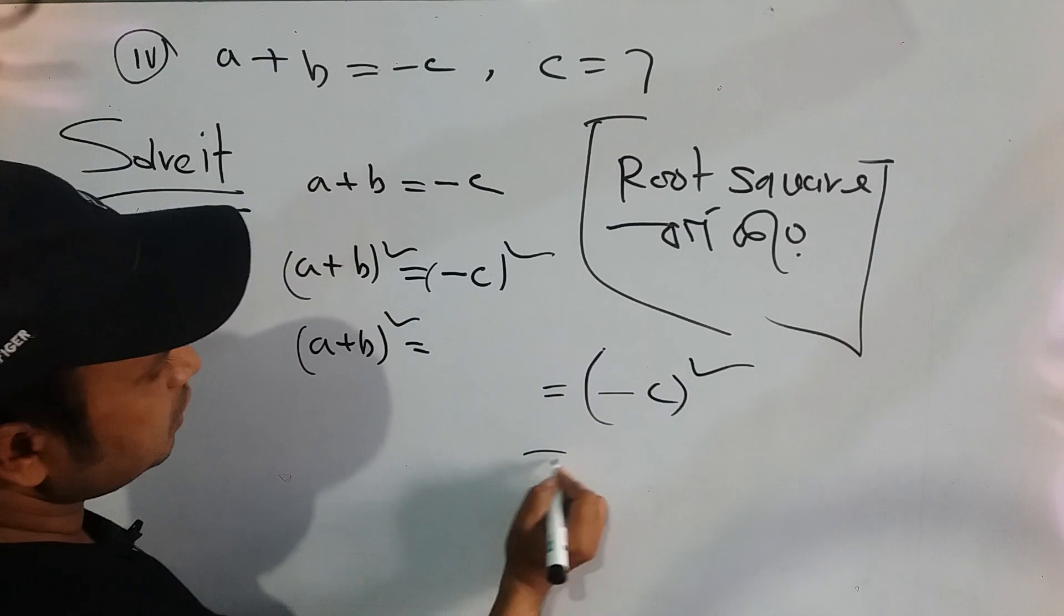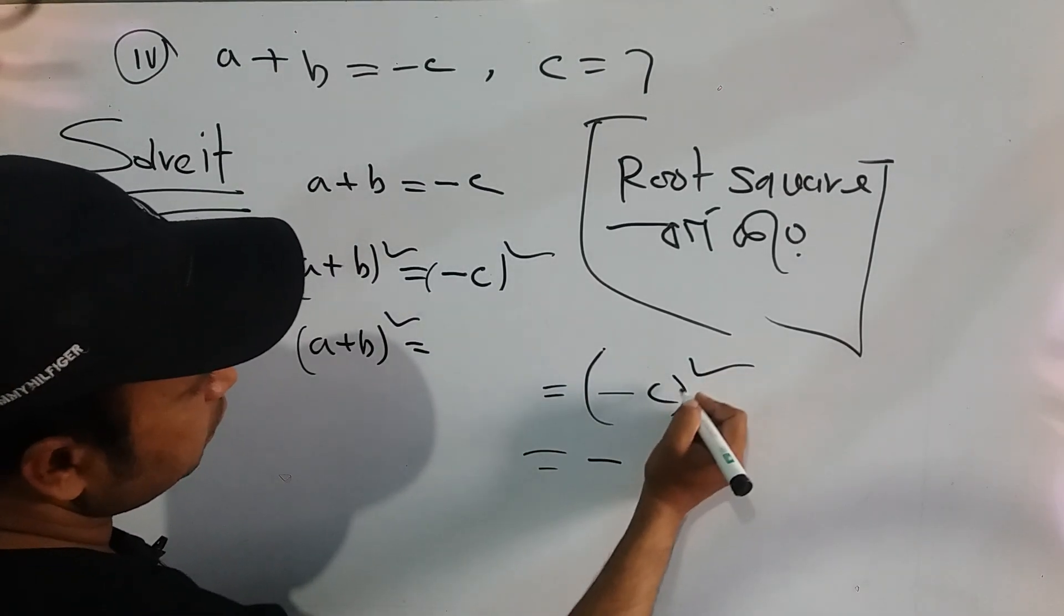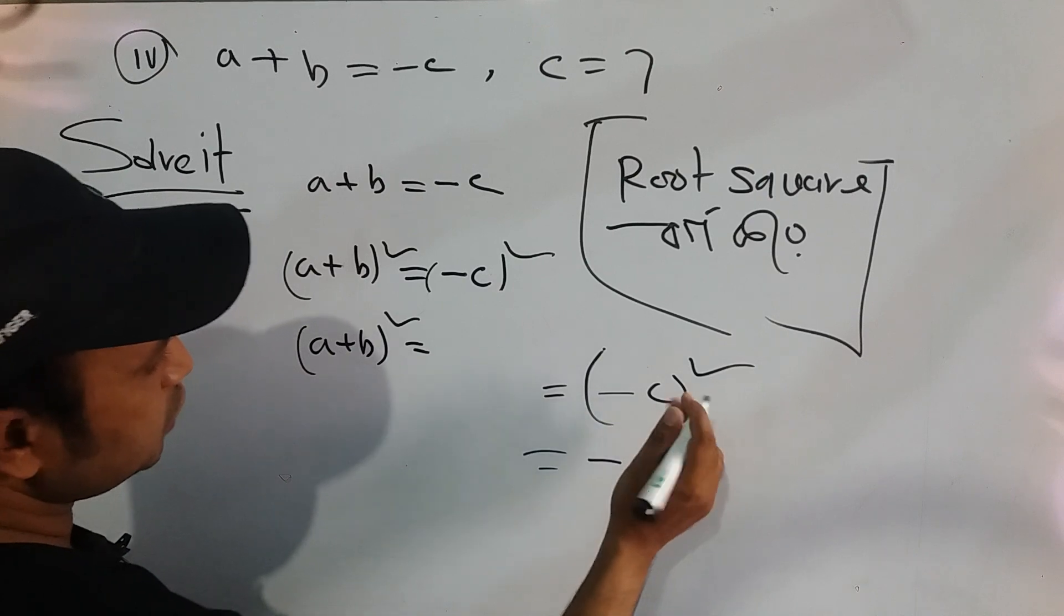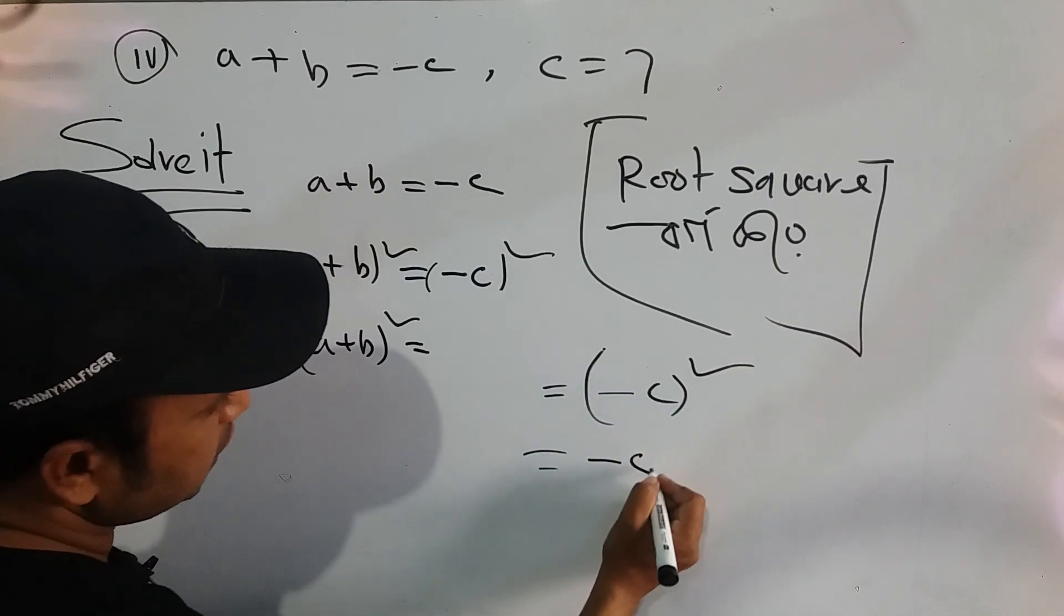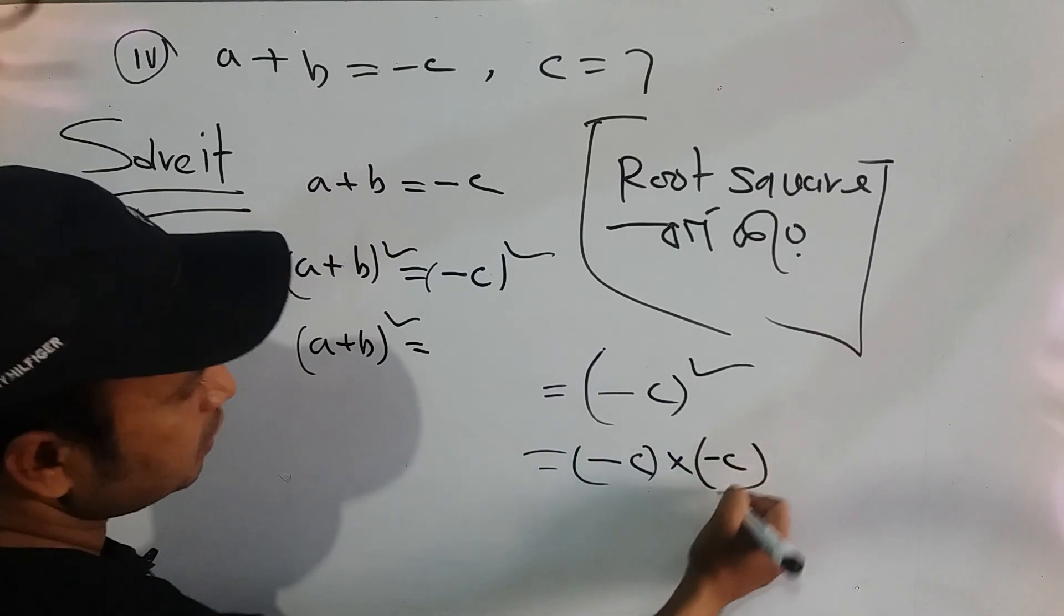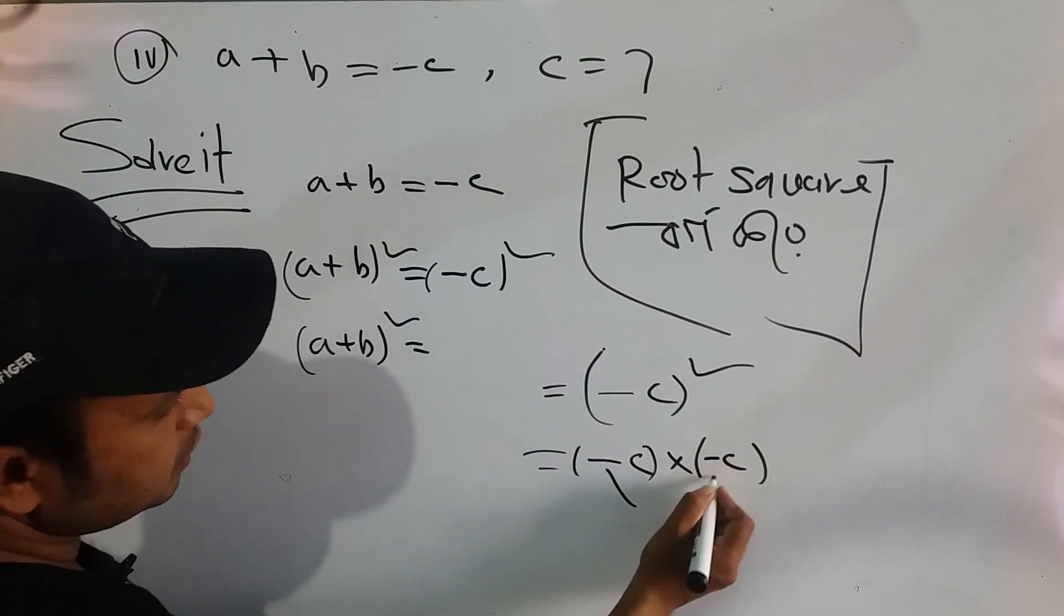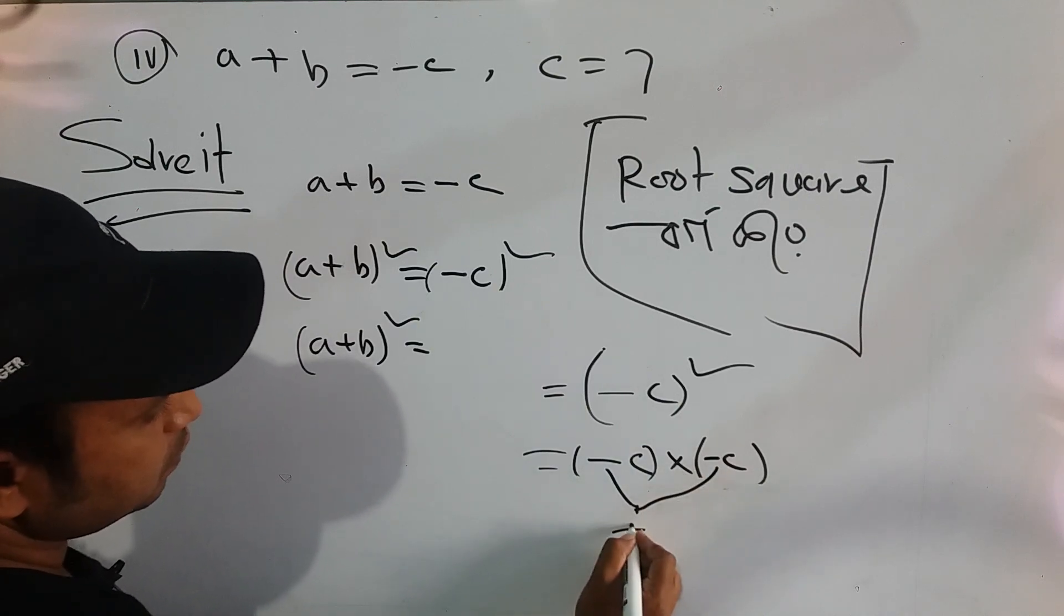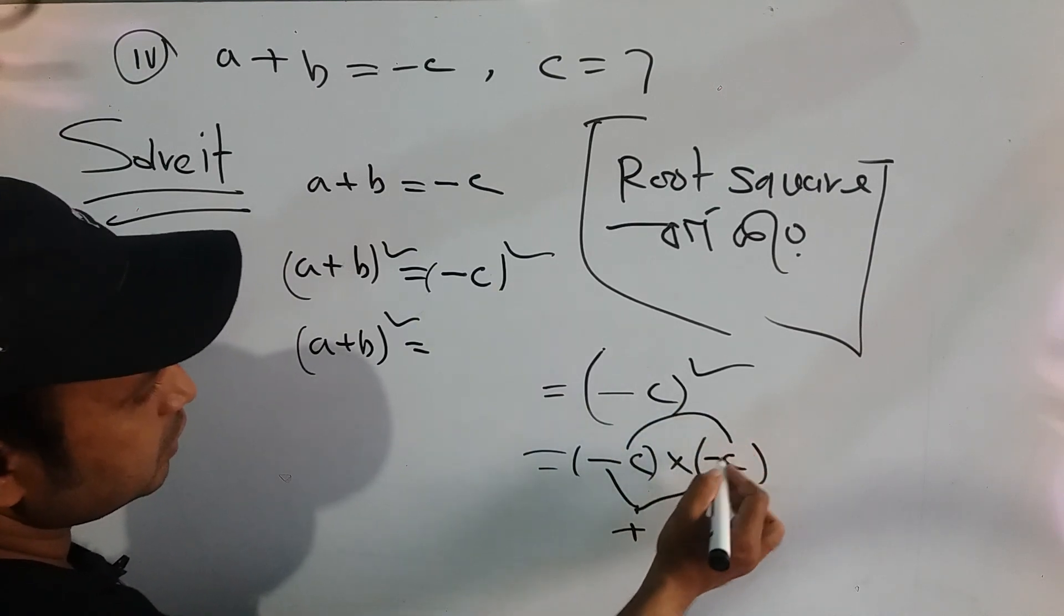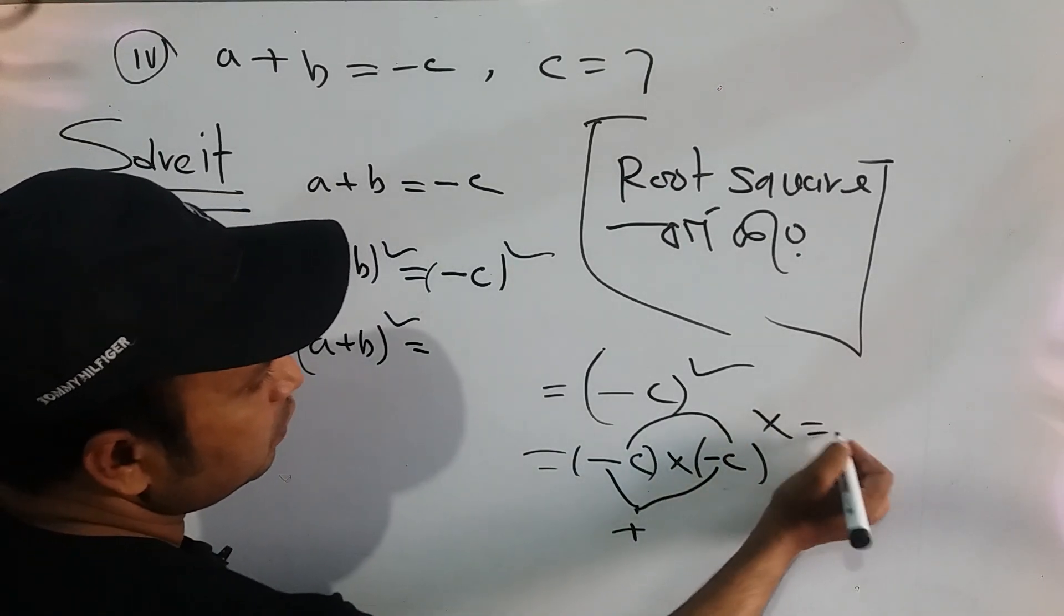That means we can write down minus c whole square. Minus c into minus c, and minus times minus equals plus, so c into c equals c squared.